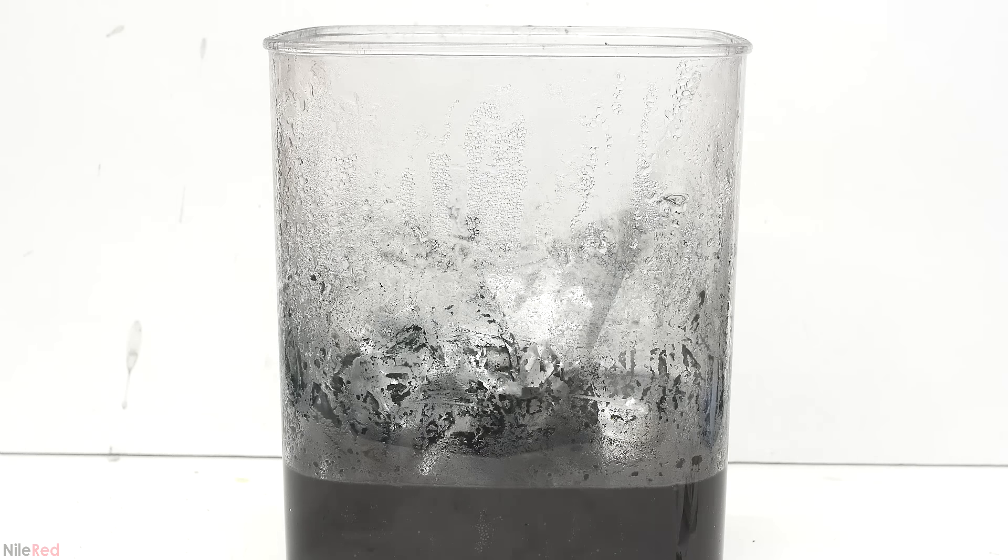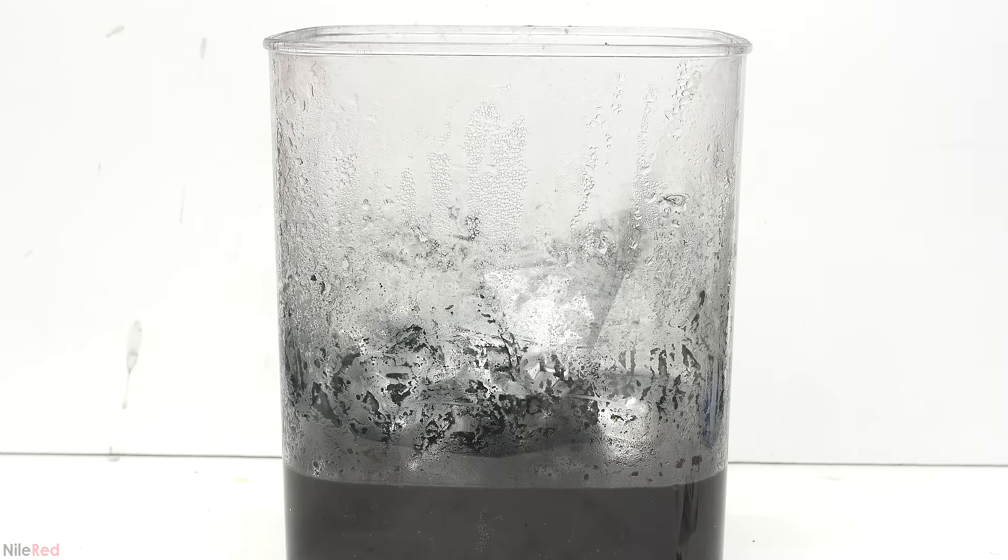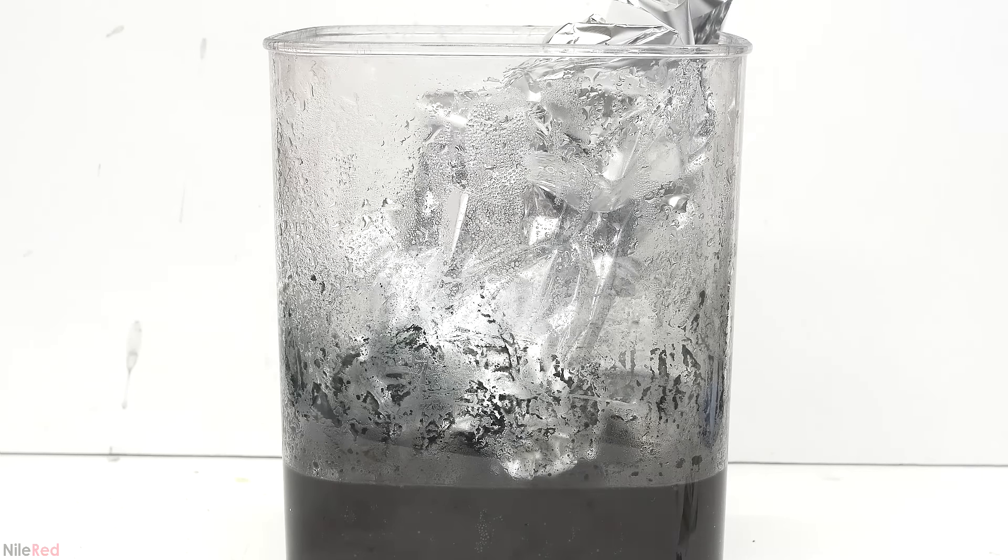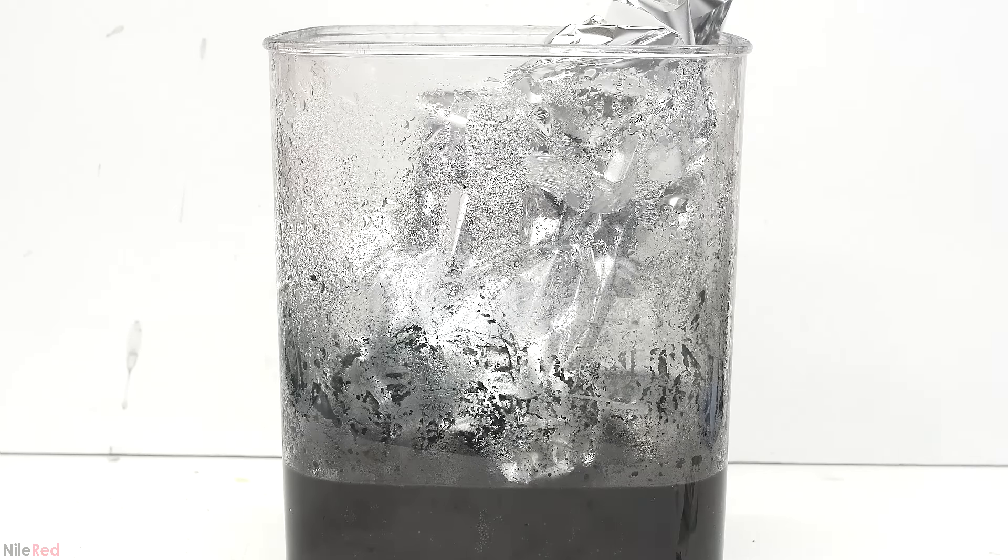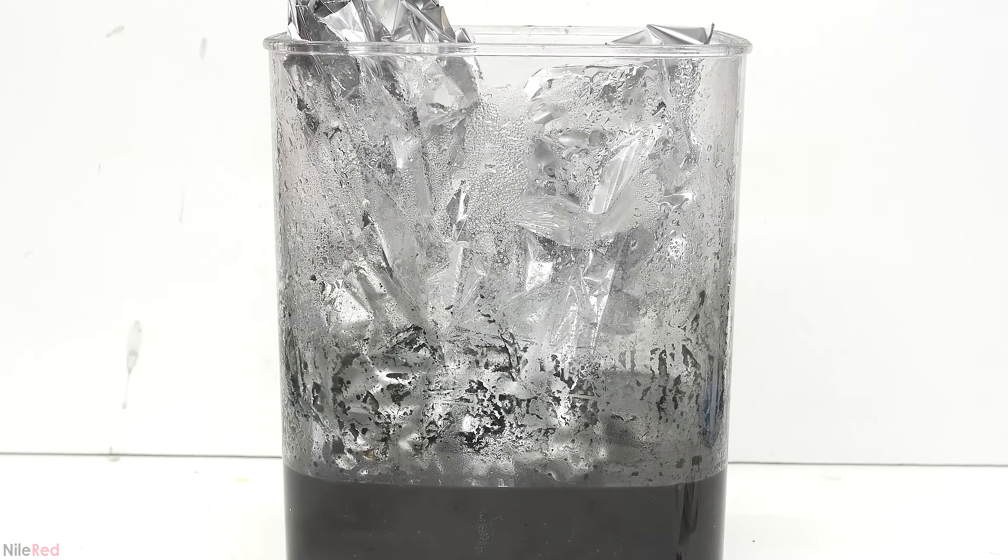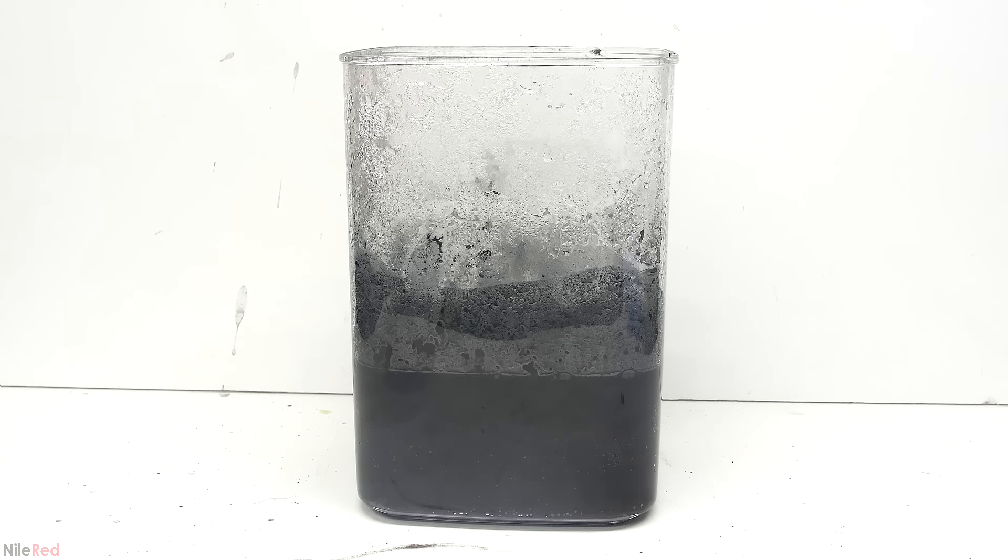With red cinnabar we have a visual cue, because when we're done we shouldn't be able to see any cinnabar left. However, with the black stuff it kind of mixes in with the goo that's formed during the reaction, and the end point is really hard to tell. To make sure I was done, I just used a huge excess of aluminum, probably three or four times the amount that I needed.